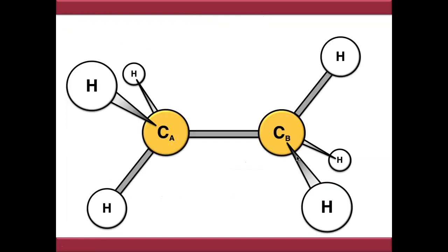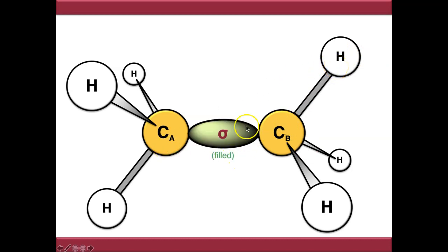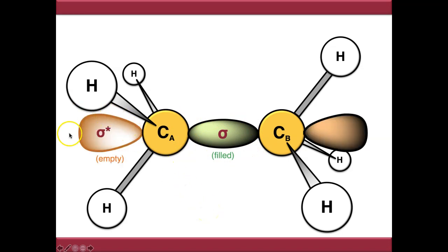Looking at this on the 3D structure of ethane, ignoring all orbitals between carbon and hydrogen, between the two carbons we have a filled sigma bonding orbital holding the two together, and an empty sigma star antibonding orbital outside of the internuclear distance. We'll see why those are important in later videos.